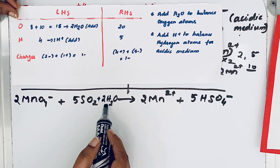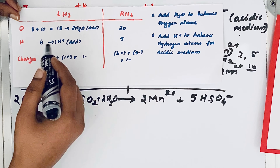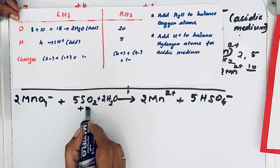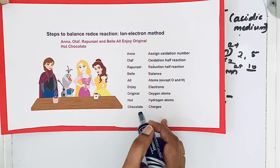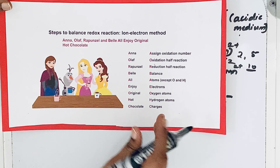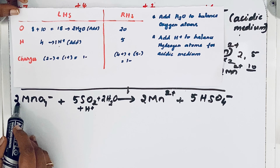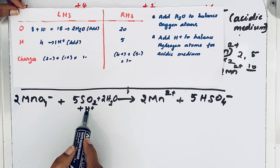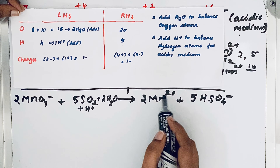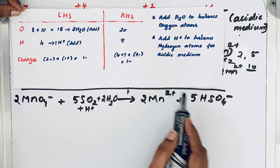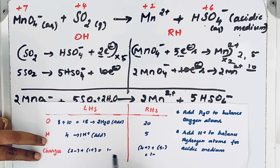On the left-hand side we have 4 hydrogen atoms (from 2H2O), but on the right-hand side there are 5 hydrogen atoms (from 5HSO4⁻). So 1 hydrogen atom is less on the left, and we add 1H⁺ to the left-hand side. Now checking charges: on the left side we have 2 minus (from 2MnO4⁻) plus 1 plus (from H⁺), giving a total of 1 minus. On the right side, 2 times 2+ gives 4 plus, and 5 minus (from 5HSO4⁻), giving 1 minus total.